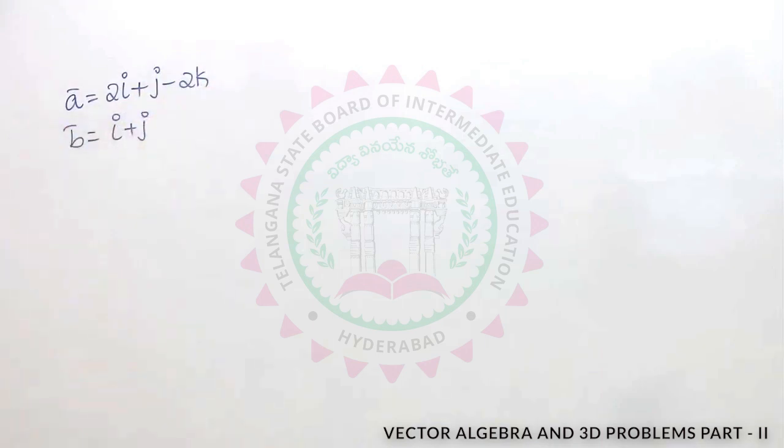a bar is equal to 2i plus j minus 2k and b bar is equal to i plus j. c bar is a vector.